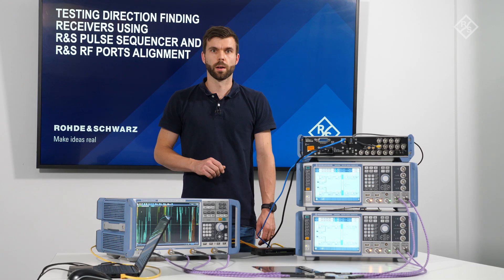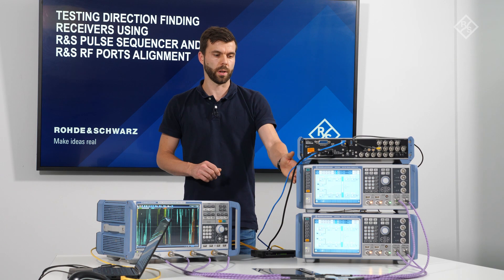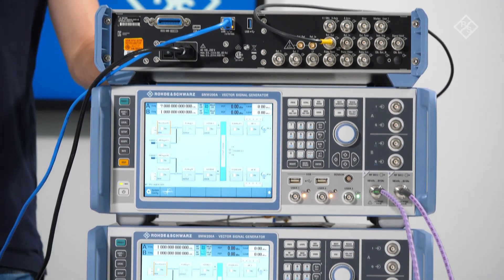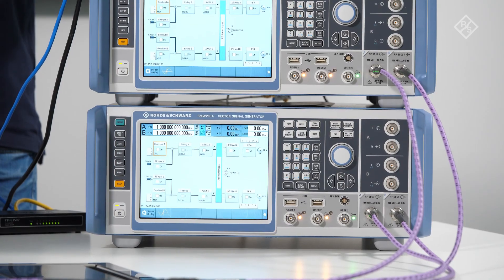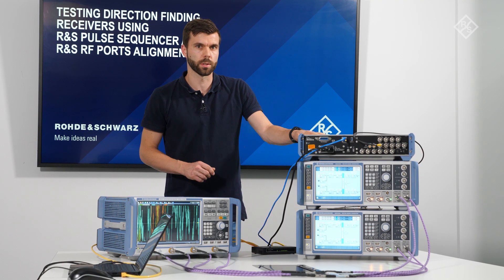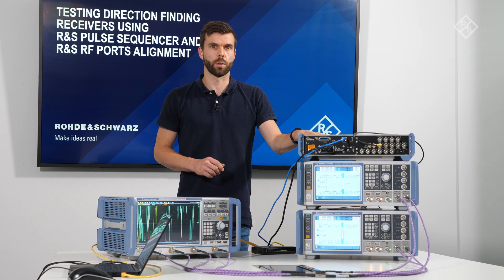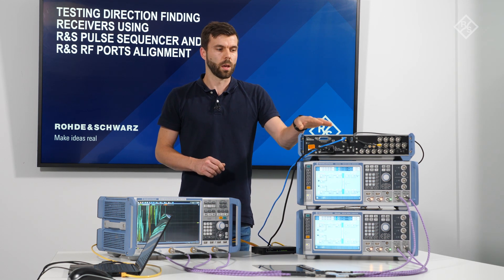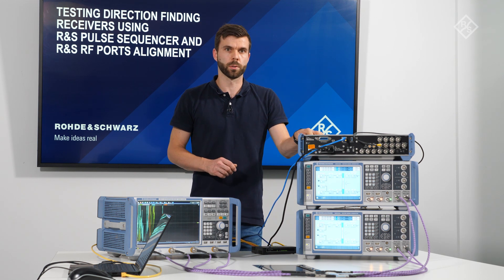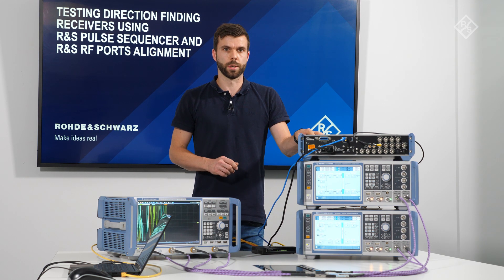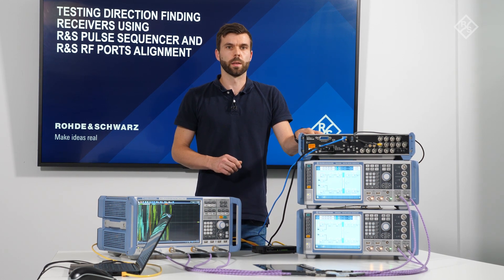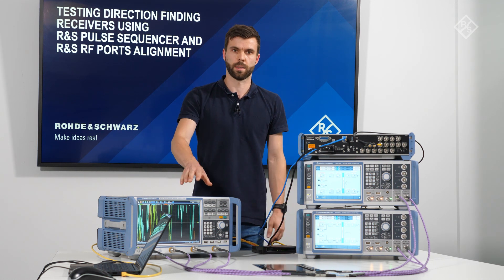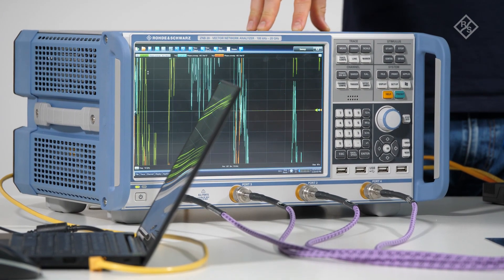Today I want to show you how to test a direction-finding device with radar signals from a moving emitter. We have a setup consisting of two SMW200A, each with two RF ports. We have a SMA100MB, which serves as a LO source, which is fed into the IQ modulator of each of the paths. We aligned this setup in terms of amplitude, group delay, and phase — the procedure is shown in another video. In this video, we want to provide test signals to a four-port DUT. In our case, a ZNL20 vector network analyzer serves as DUT.